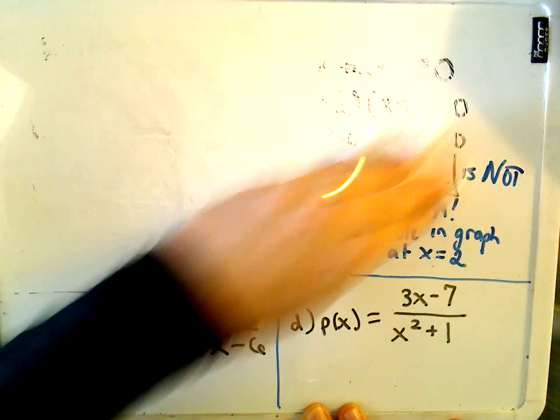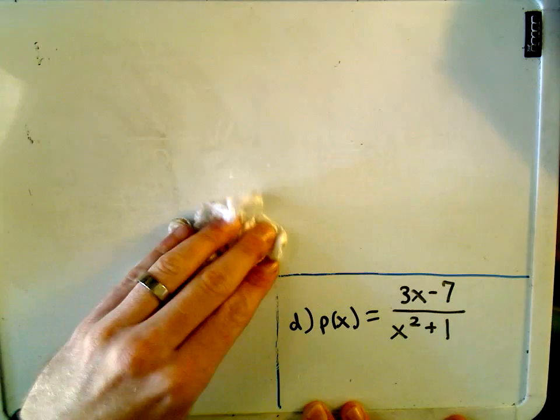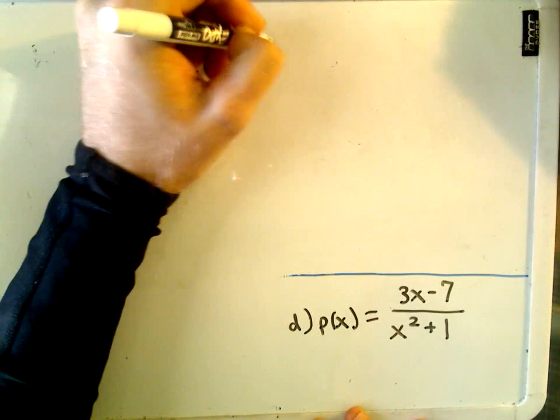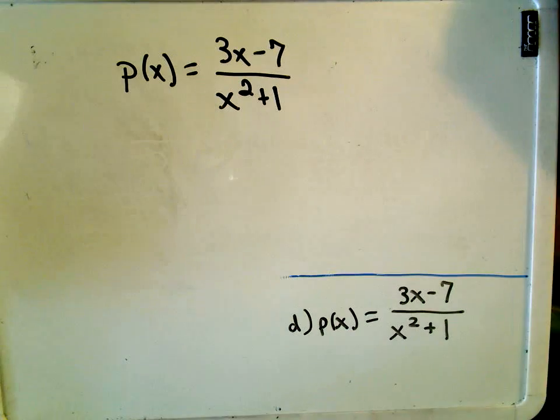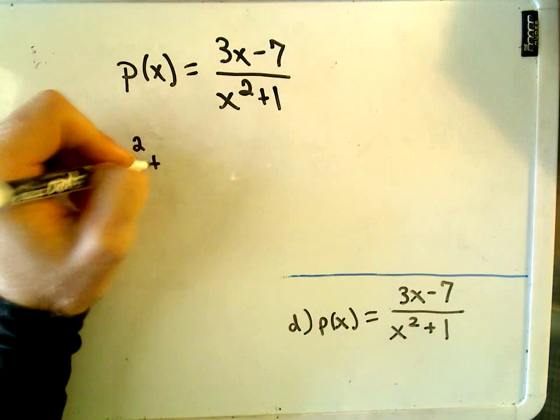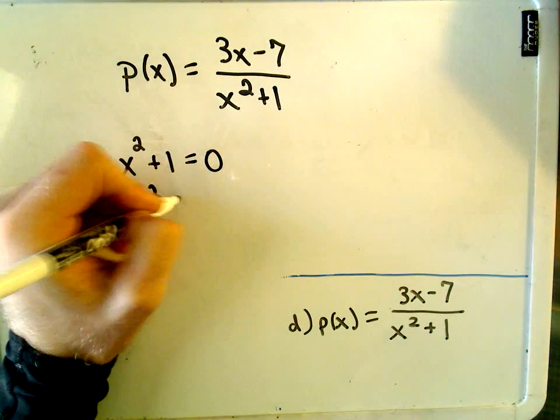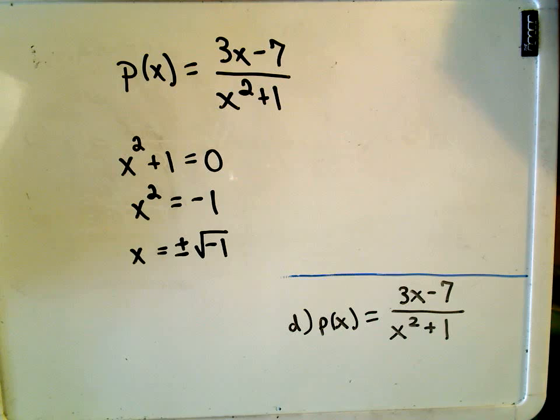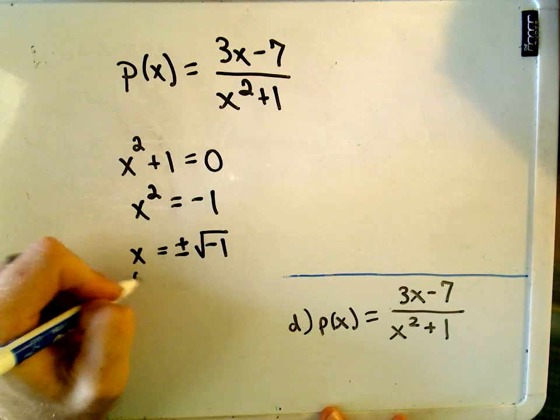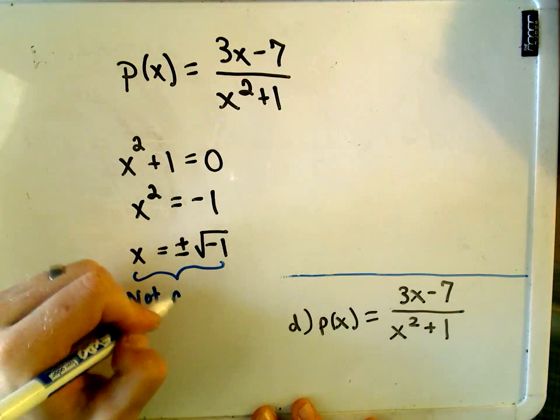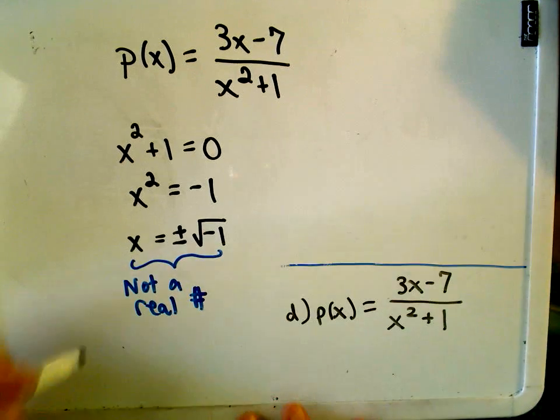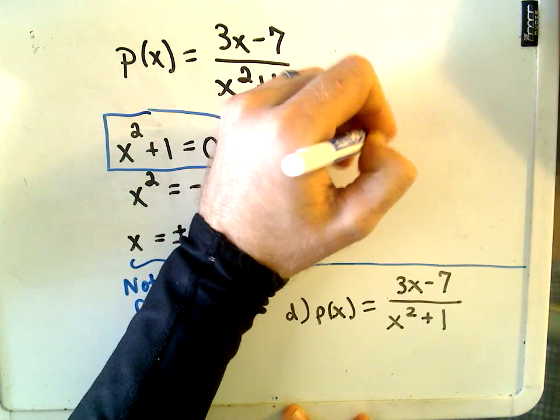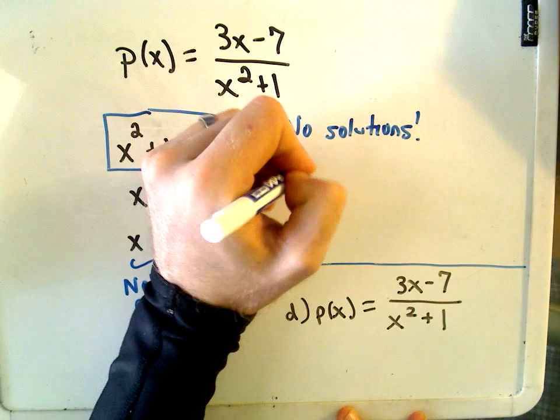So last but not least, let's do our last function here. P of x for Patrick, 3x minus 7 over x squared plus 1. Well, again, I'm trying to find any vertical asymptotes. I set the denominator equal to 0. Well, we could use the square root property again and subtract 1 from both sides. But now if I try to take the square root of a negative number, we could resort to imaginary numbers, but that's not what we want. We're going to use real numbers here. So this is not a real number. And that tells us that our original equation, x squared plus 1, has no solutions. And all that means is we've got a rational function that has no vertical asymptotes.